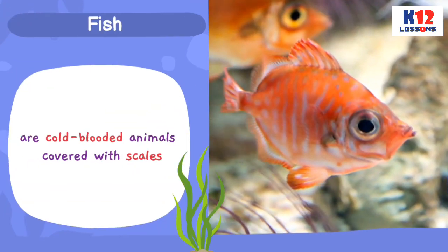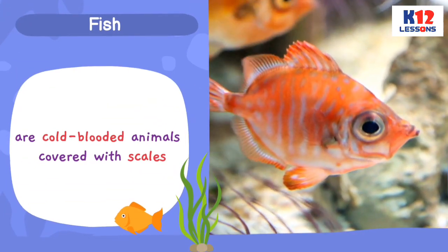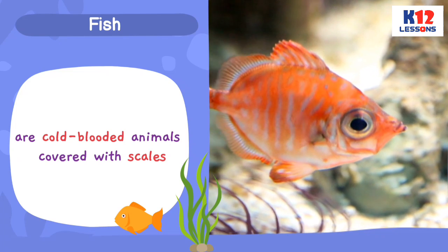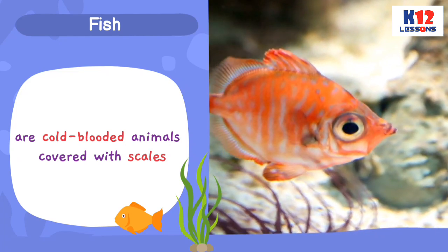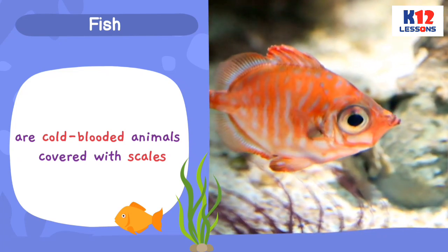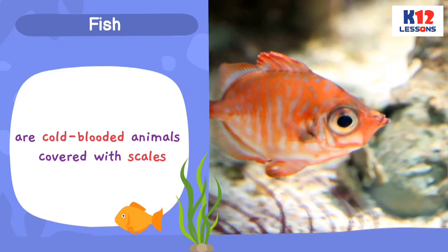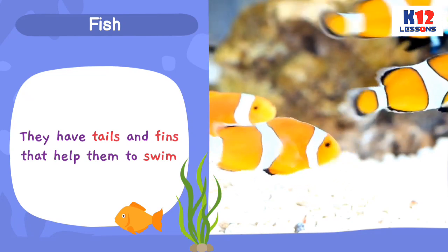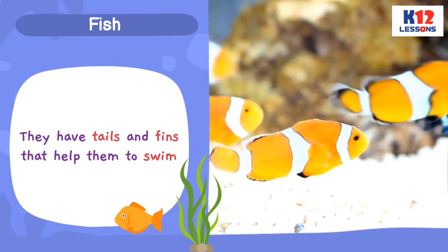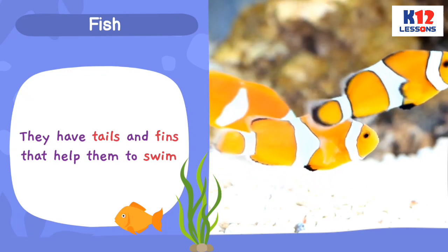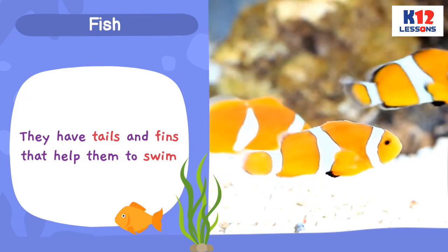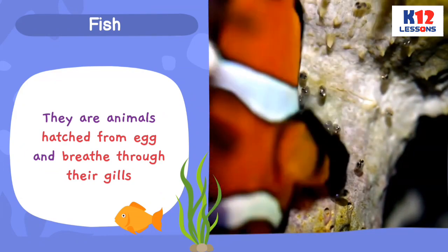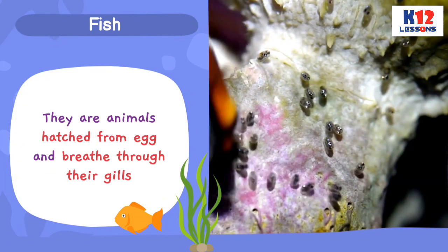Fish are cold-blooded animals covered with scales. They have tails and fins that help them to swim. They are animals hatched from egg and breathe through their gills.